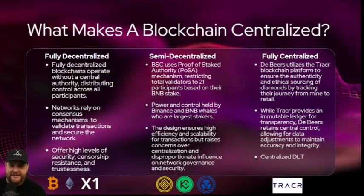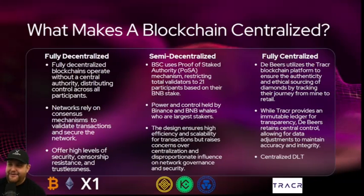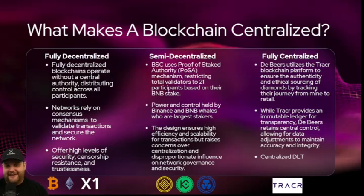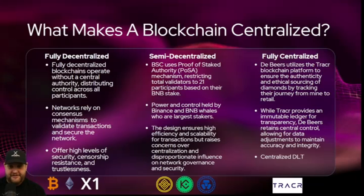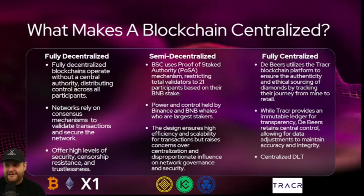There are also fully centralized blockchains. De Beers utilizes the Tracer blockchain platform to ensure the authenticity of diamonds, tracking them from the mine to the person. While Tracer provides an immutable ledger for transparency, De Beers retains central control — they run all the nodes and can make data adjustments for accuracy and integrity. It's a perfect example of a centralized DLT.